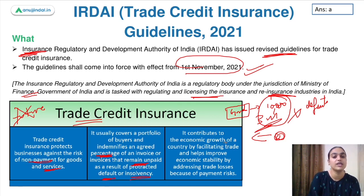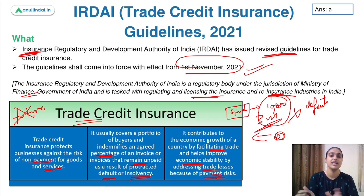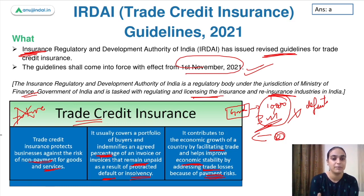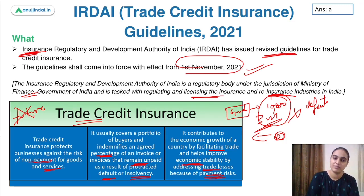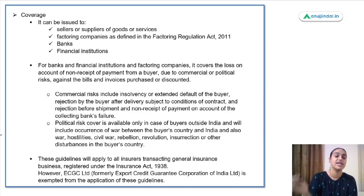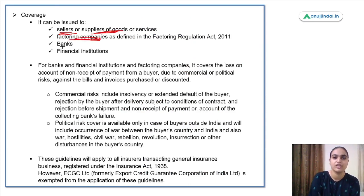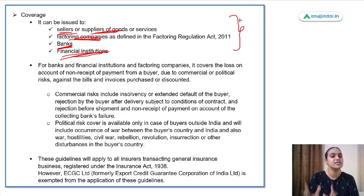Trade credit insurance also contributes to economic growth by facilitating trade and improving economic stability by addressing trade losses due to payment risks. The guidelines cover sellers or suppliers of goods and services, factoring corporations, banks, and financial institutions — all of these entities can obtain trade credit insurance to get protection against different risks.